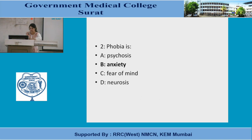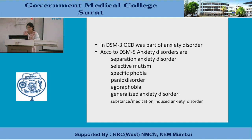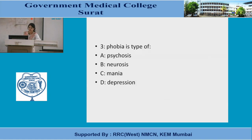If anxiety were not among the options, phobia might fall under neurosis. In the next question — phobia is a type of: A, psychosis; B, neurosis; C, mania; D, depression — there is no anxiety option. So the most appropriate answer is neurosis.